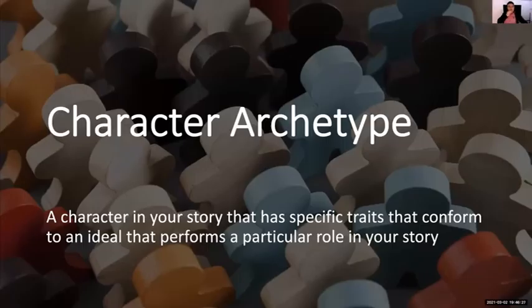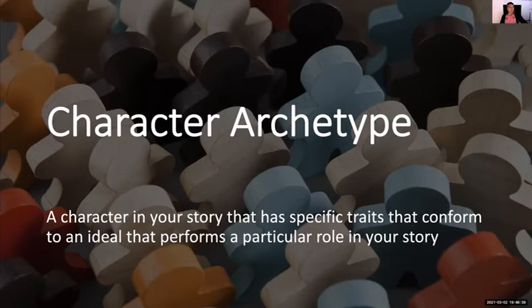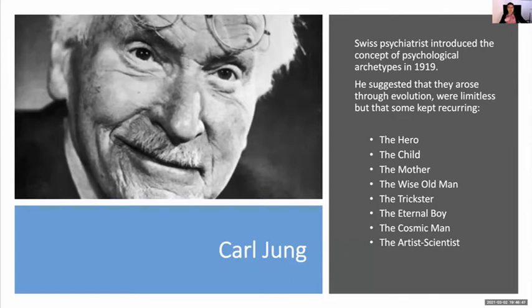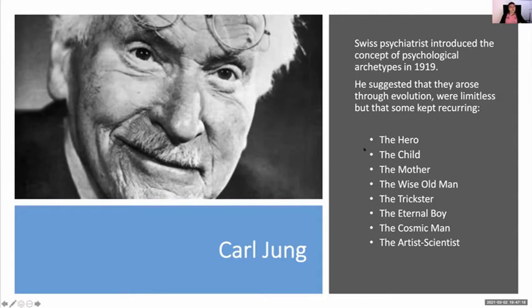So now putting those two together: a character archetype in your story has specific traits that conform to an ideal that performs a particular role in your story. Swiss psychiatrist Carl Jung introduced the concept of psychological archetypes in 1919. He suggested they arose through evolution, were limitless, but that some kept occurring. His list included: the hero, the child, the mother, the wise old man, the trickster, the eternal boy, cosmic man, and the artist scientist.